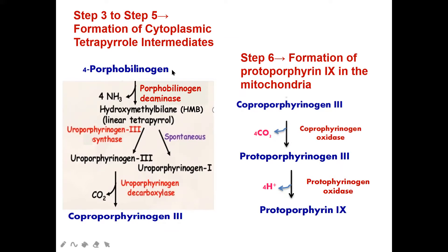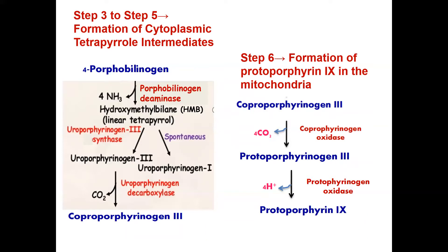Then, four porphobilinogen molecules result in the formation of the linear tetrapyrrole hydroxymethylbilane, abbreviated HMB. This reaction is catalyzed by the enzyme porphobilinogen deaminase, also known as HMB synthase.